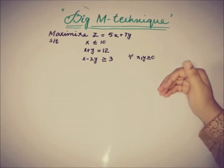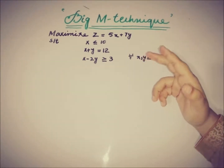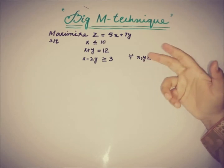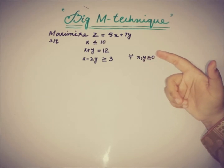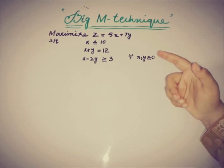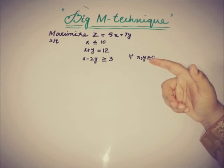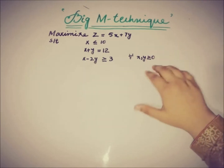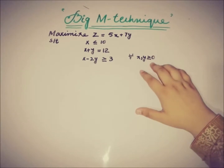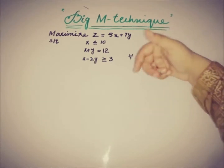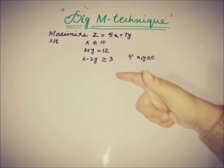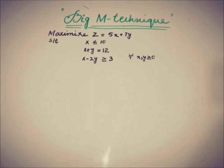Let's take an example to see how we write the standard form using the Big M technique following the same simplex algorithm. The problem is: maximize z equals 5x plus 7y, subject to three constraints — x less than or equal to 10; x plus y equal to 12; and x minus 2y greater than or equal to 10 — with x and y greater than or equal to 0. All three types of constraint signs are present: less than or equal to, equal, and greater than or equal to.